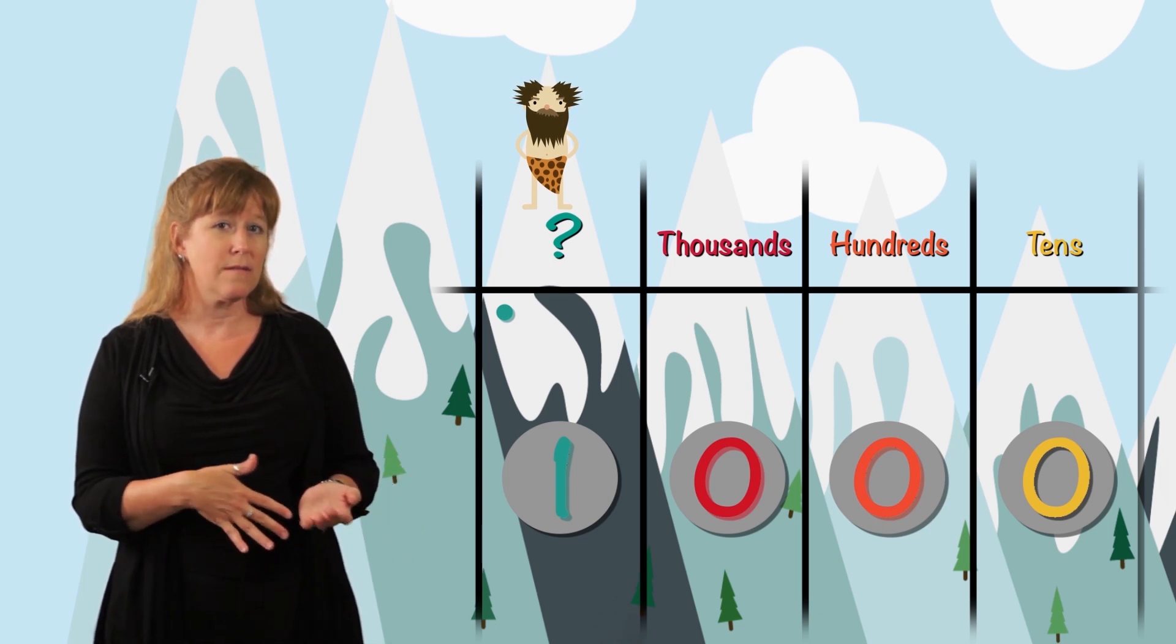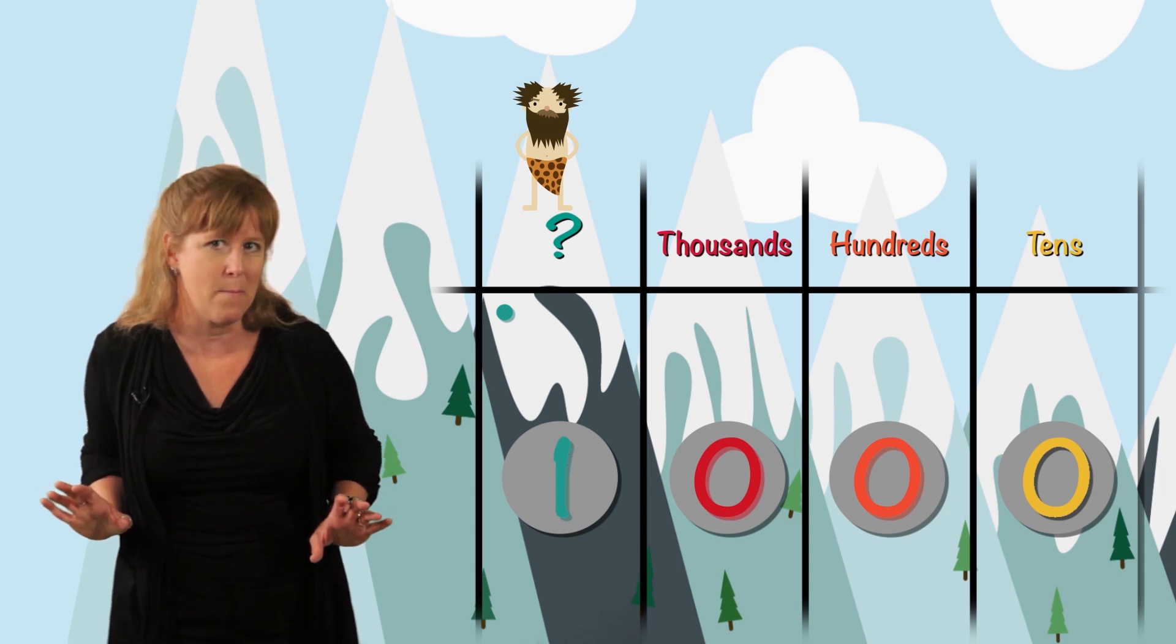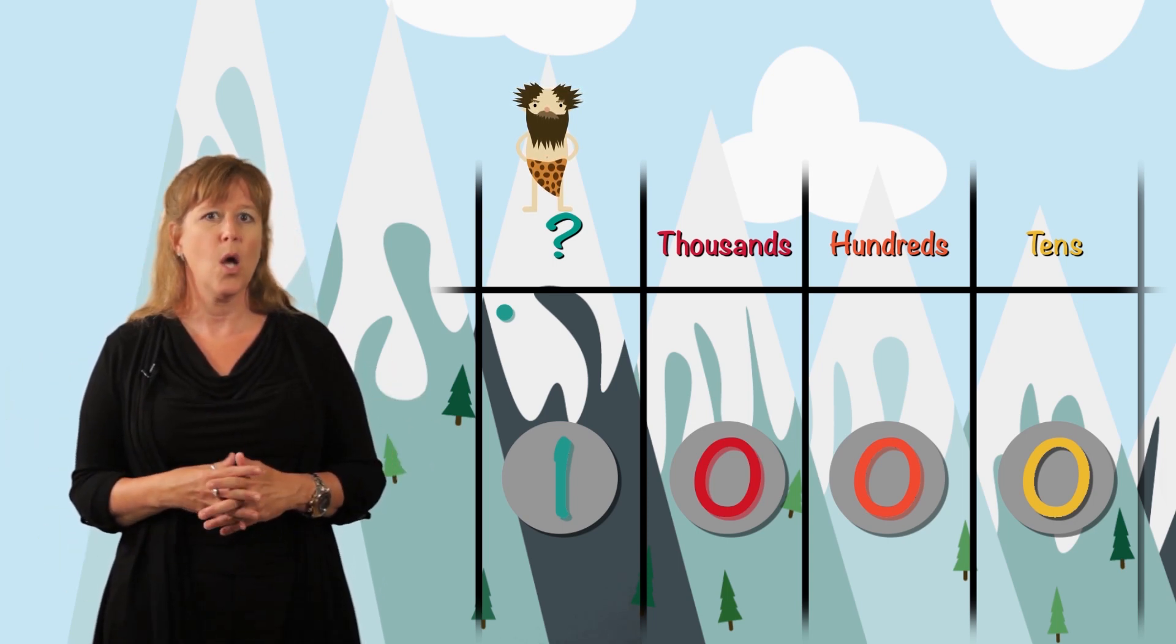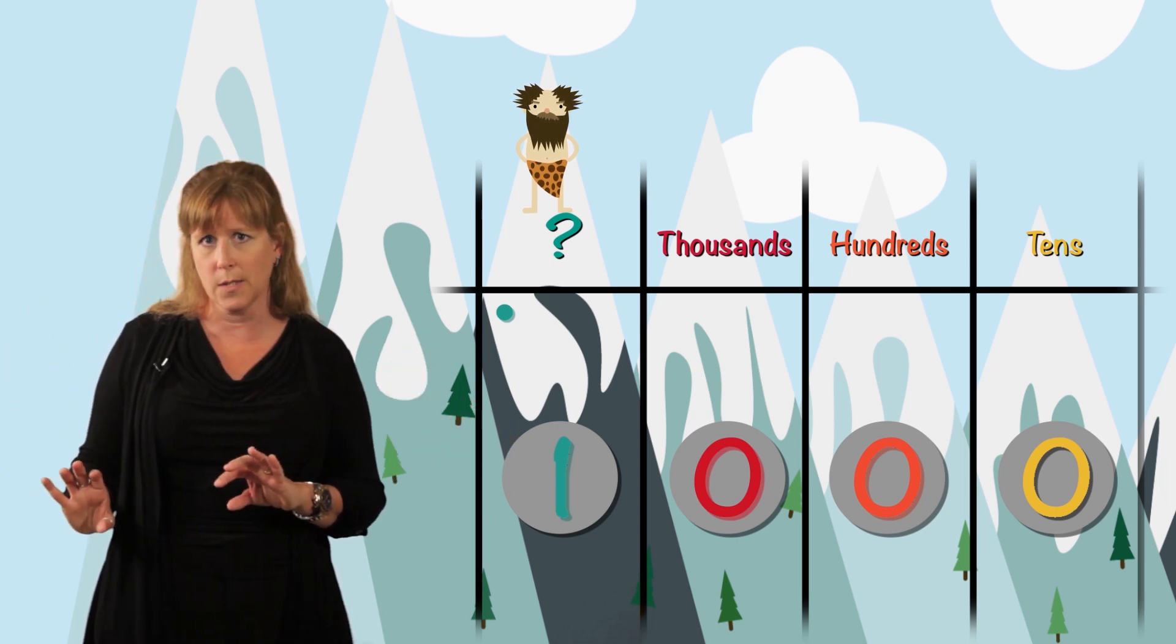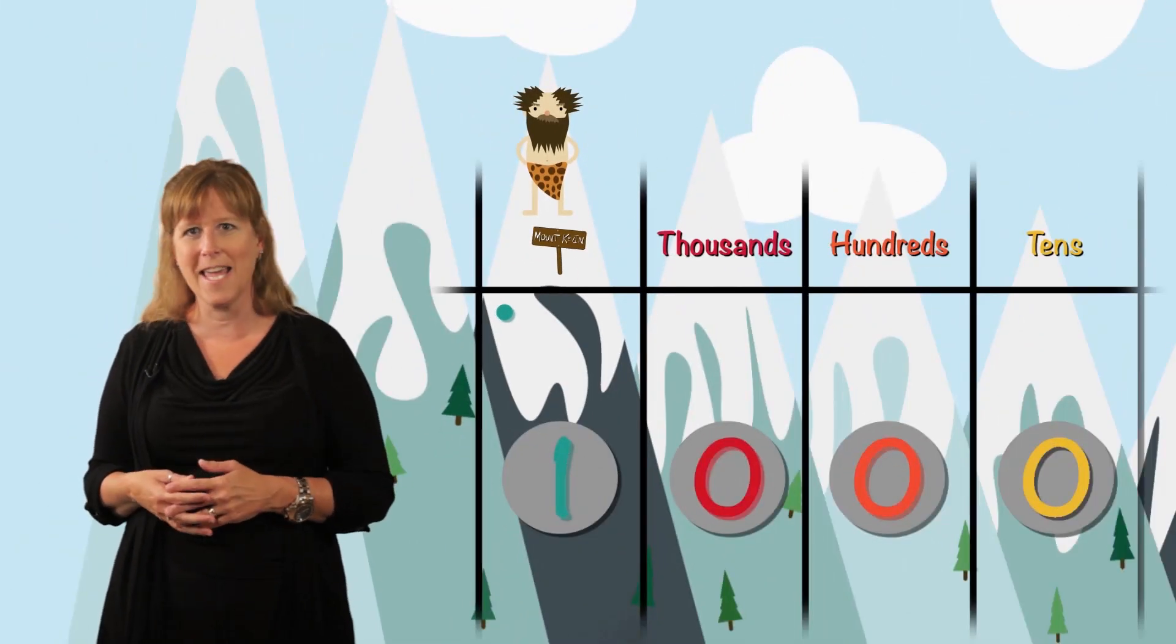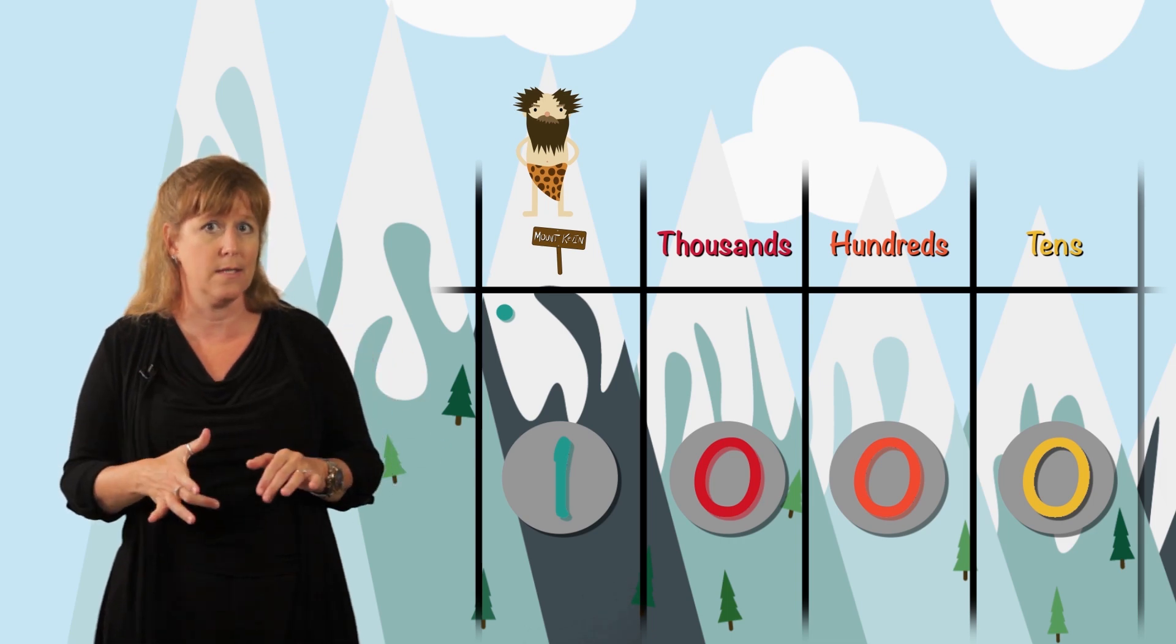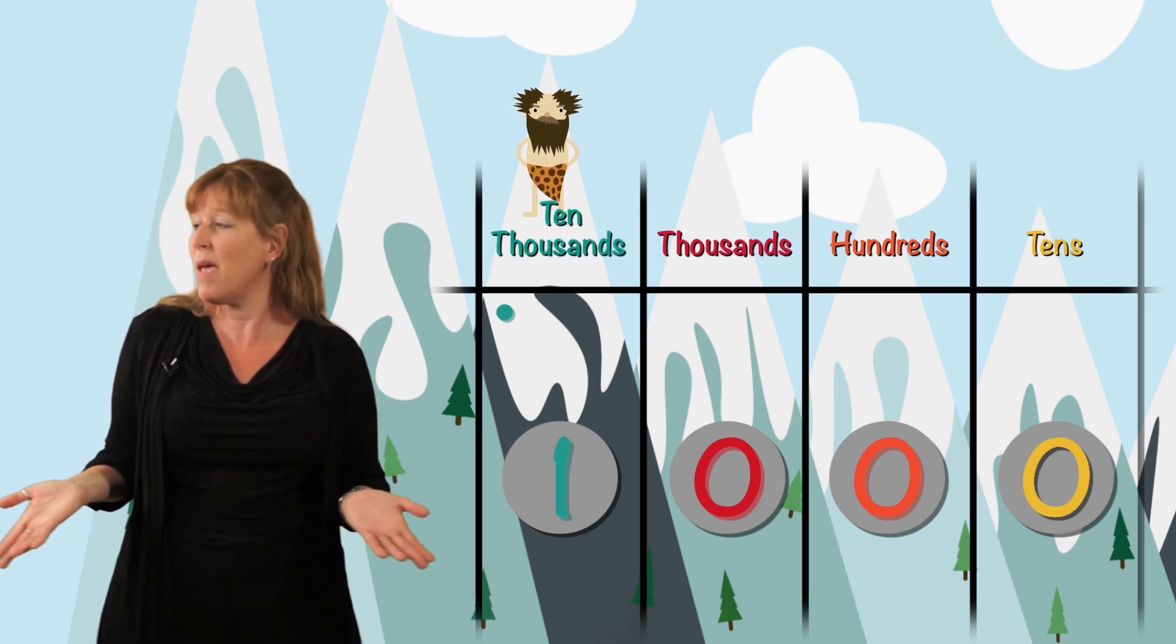So we've got good news and bad news. The good news, we get to name it. The bad news, we have to name it properly. What do you think this next column after thousands should be called? Clown Kevin. Nice try, Kevin. This next column after thousands, where we have ten thousands, is called the ten thousands column. Makes sense, right?